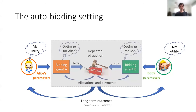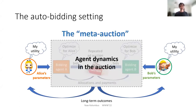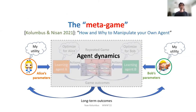What happens in this gray box is that every agent is running some learning algorithm that aims to optimize the utility for its user, but it optimizes according to the parameters that were reported by the user. So Alice and Bob are not really playing the original auction as defined by the platform. Instead, they are playing what we call a meta-auction, in which their actions are the parameters they choose to give to their agents, and their utilities are determined by the dynamics of these agents. This metagame model is more general and opens many interesting questions.